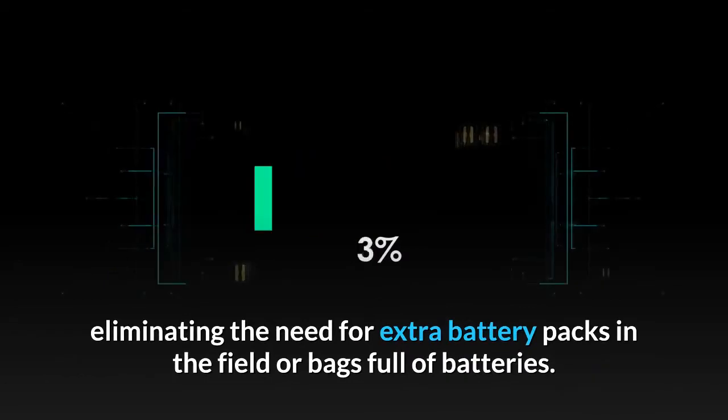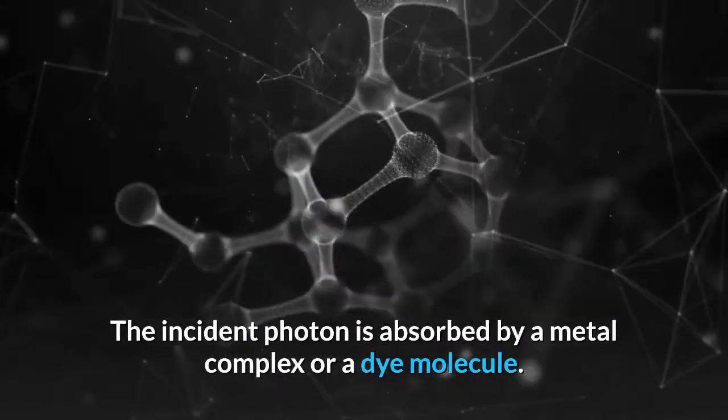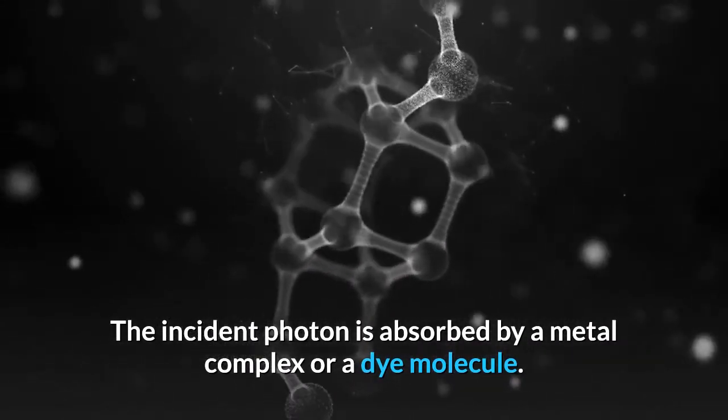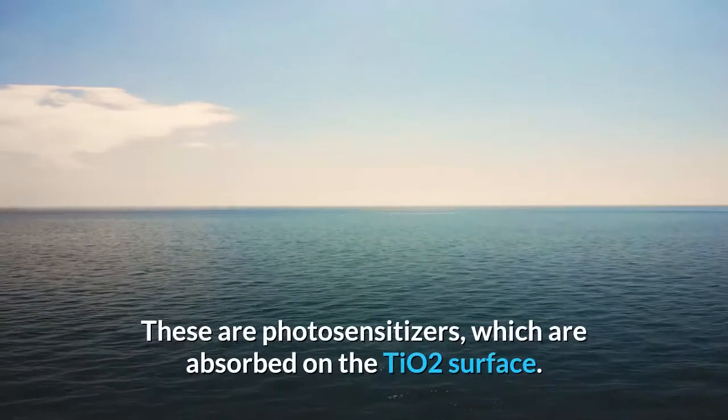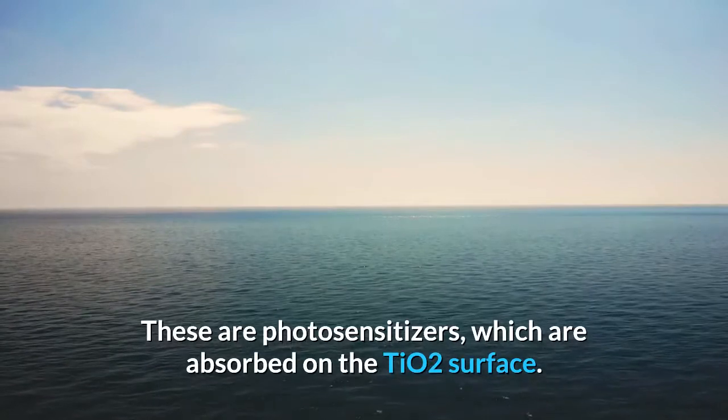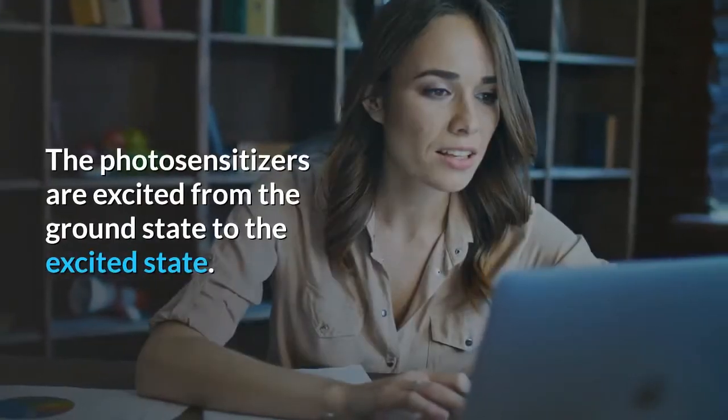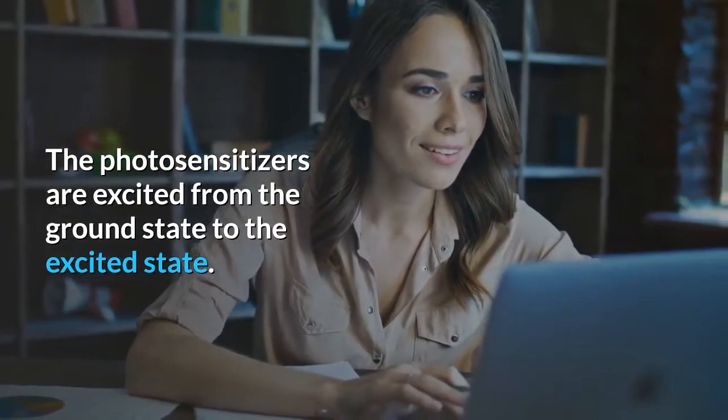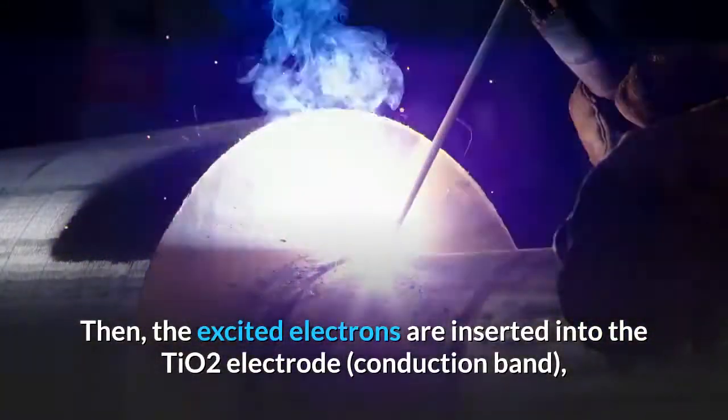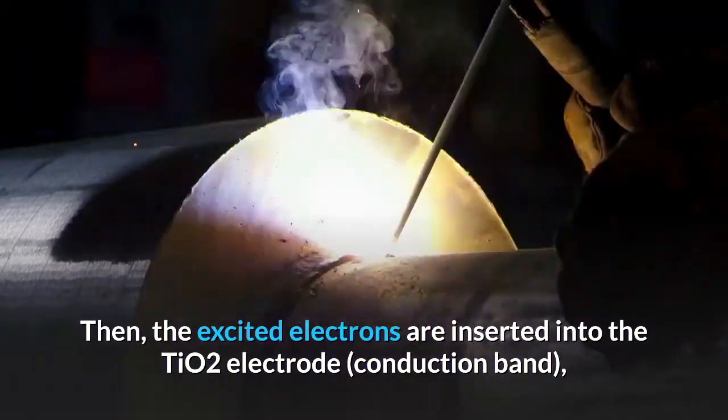The incident photon is absorbed by a metal complex or a dye molecule. These are photosensitizers which are absorbed on the titanium dioxide surface. The photosensitizers are excited from the ground state to the excited state, then the excited electrons are inserted into the titanium dioxide electrode conduction band, causing the oxidation of the photosensitizer.